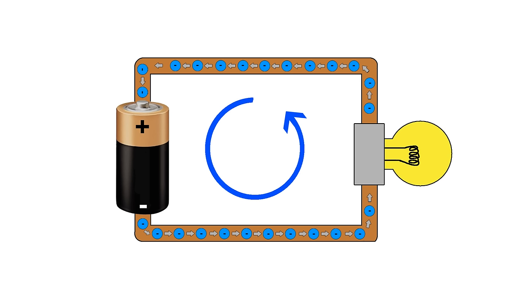An electric circuit is a closed loop where current can flow around. In this example of a flashlight, electrons can flow from the battery, through the copper wire, through the light, and through another piece of wire to the other side of the battery.